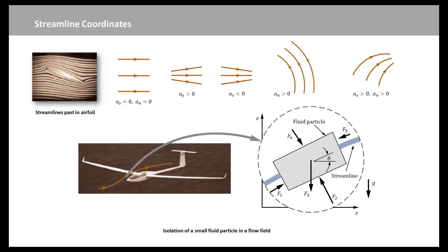To determine the forces necessary to produce a given flow, or conversely what flow results from a given set of forces, we consider the free body diagram of a small fluid particle as shown in this figure. The particle of interest is removed from its surroundings, and the reactions of the surroundings on the particle are indicated by the appropriate forces F1, F2, and so forth. For the present case, the important forces are assumed to be gravity and pressure. Other forces such as viscous forces and surface tension effects are assumed negligible. The acceleration of gravity G is assumed to be constant and acts vertically in the negative z direction, at an angle theta relative to the normal to the streamline.